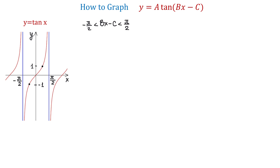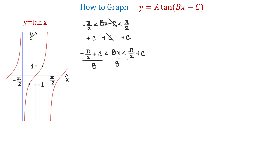Now, to solve this inequality for x, first we will add c to all three parts. In the middle, negative pi over 2 plus c is less than bx and is less than pi over 2 plus c. And now to get x alone, we will divide all three parts by b. In the middle, b will cancel. Then we will have x is greater than negative pi over 2 plus c over b and is less than positive pi over 2 plus c over b. These two expressions represent the new asymptotes for the function y equals a tangent of bx minus c.